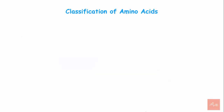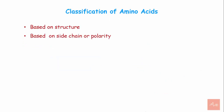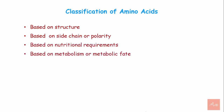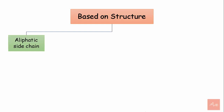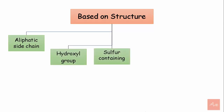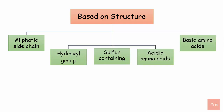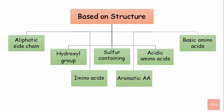Amino acids are classified based on four categories: based on structure, based on polarity, based on nutritional requirement, and based on metabolism or metabolic fate. Based on structure, amino acids can be classified as aliphatic side chain amino acids, hydroxyl group-containing amino acids, sulfur-containing amino acids, acidic amino acids, basic amino acids, imino acids, and aromatic amino acids.